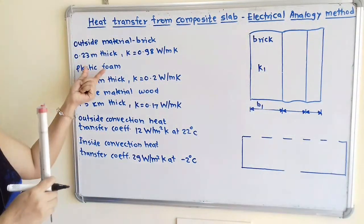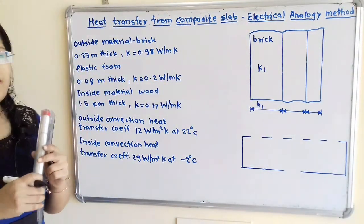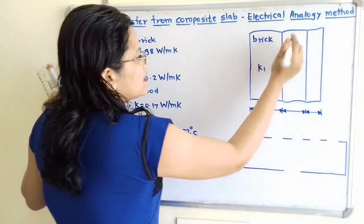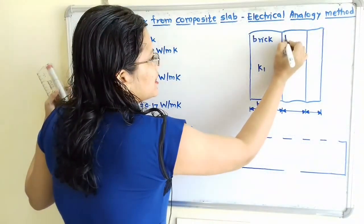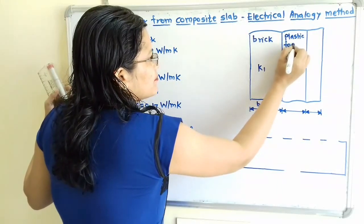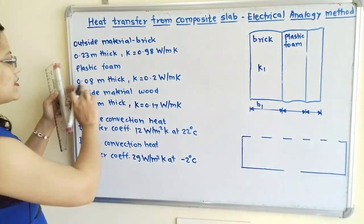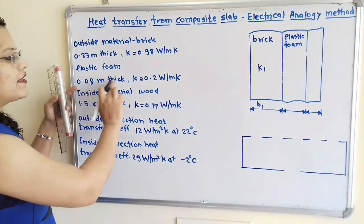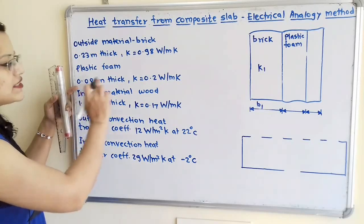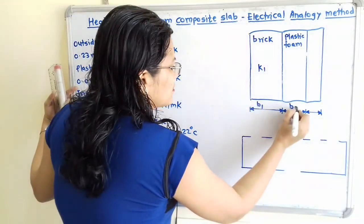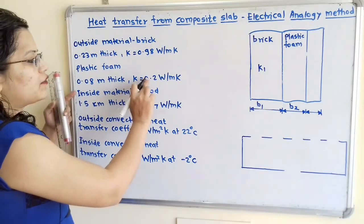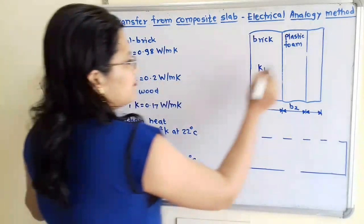The next material is plastic foam. After brick there is a second section for plastic foam with thickness B2 = 0.08 m and conductivity K2 = 0.2 W/mK.